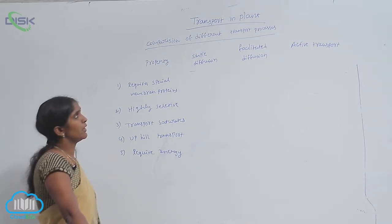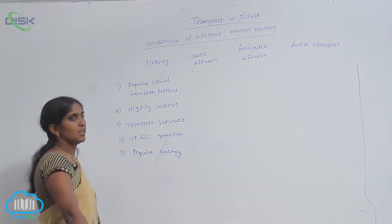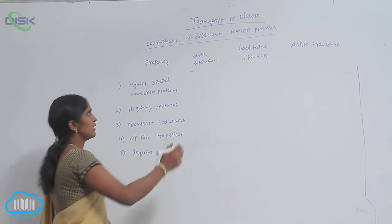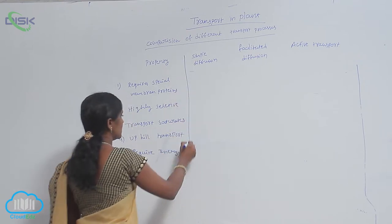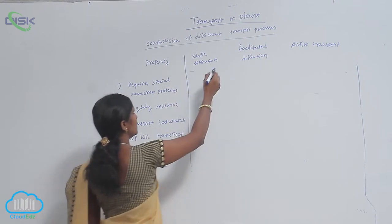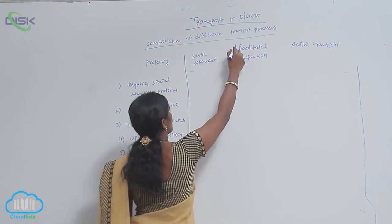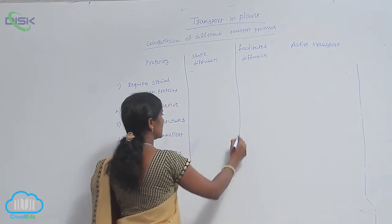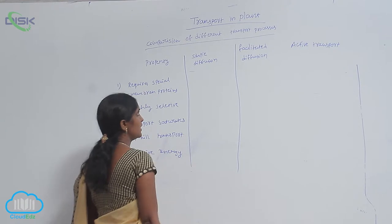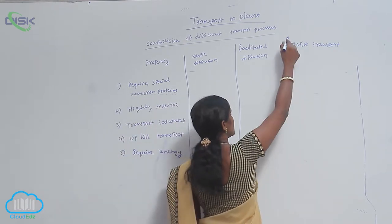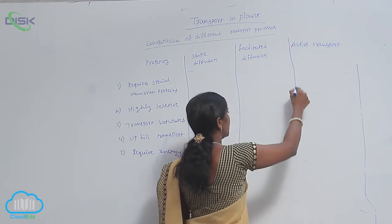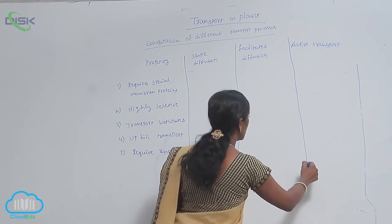The comparison of different transport processes. Here we see three types of processes: simple diffusion, facilitated diffusion, and active transport.